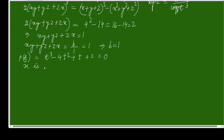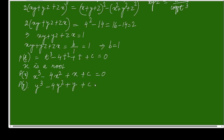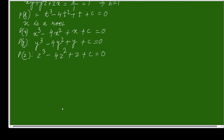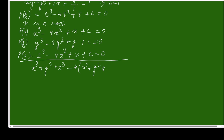Since x is a root: x³ − 4x² + x + c = 0. Since y is a root: y³ − 4y² + y + c = 0. Since z is a root: z³ − 4z² + z + c = 0. Adding these three equations gives x³ + y³ + z³ − 4(x² + y² + z²) + (x + y + z) + 3c = 0.